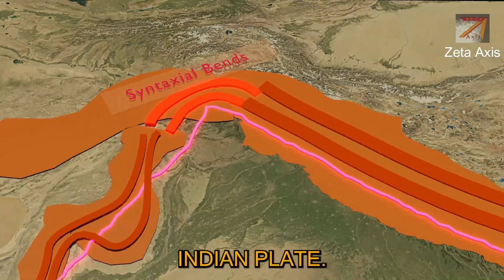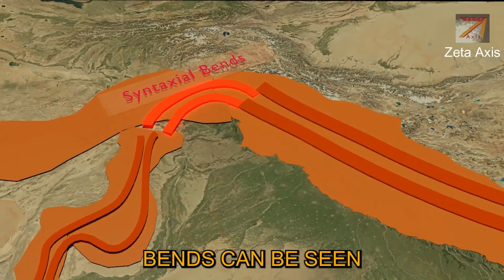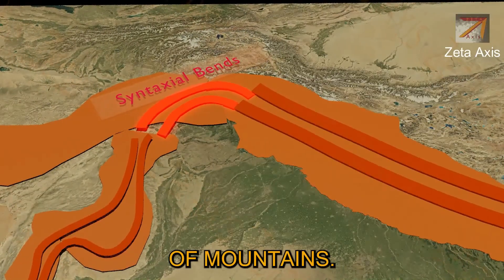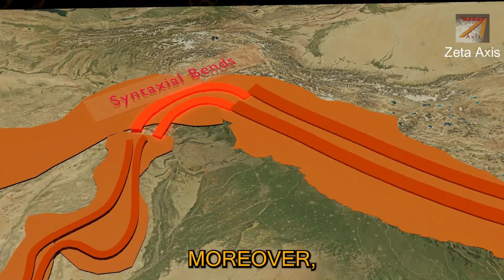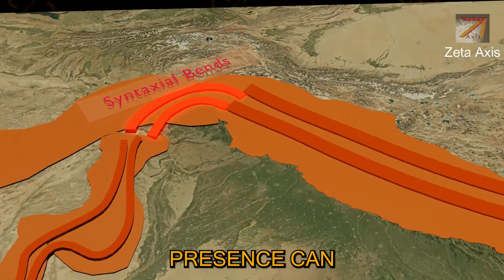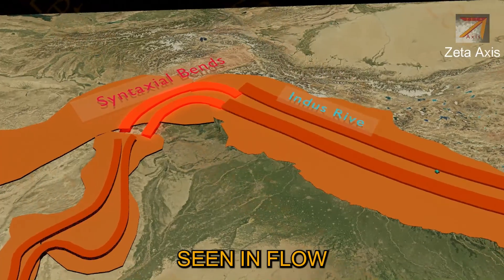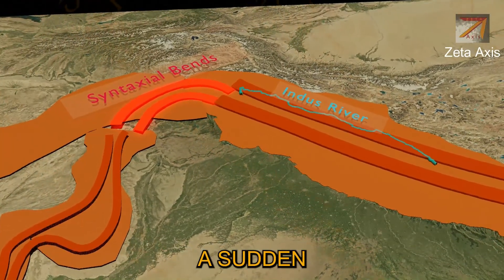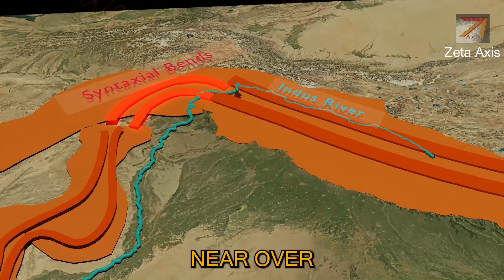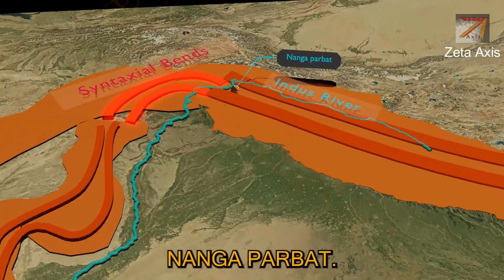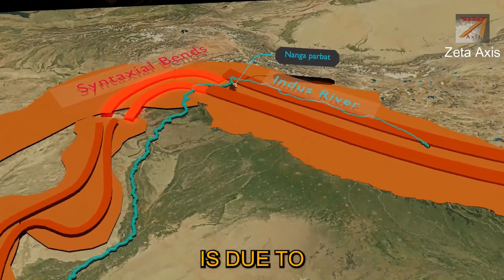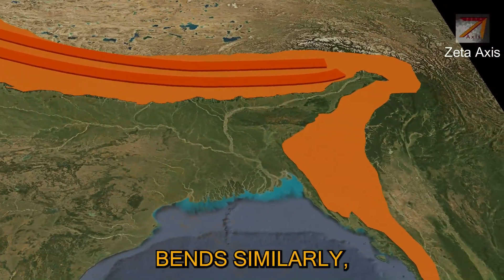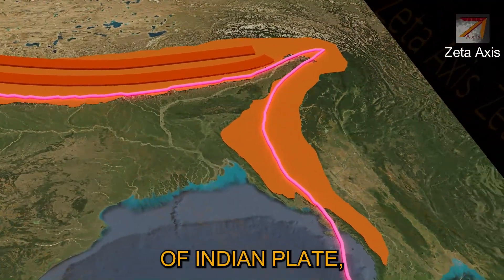Because the compressive forces on the western edge and the northern edge of the Indian plate were acting in different directions, we see formation of syntaxial bends on the northern-western edge of the Indian plate. These syntaxial bends are clearly seen in the flow of the Indus river, which takes a sudden southward turn near Nanga Parvata.